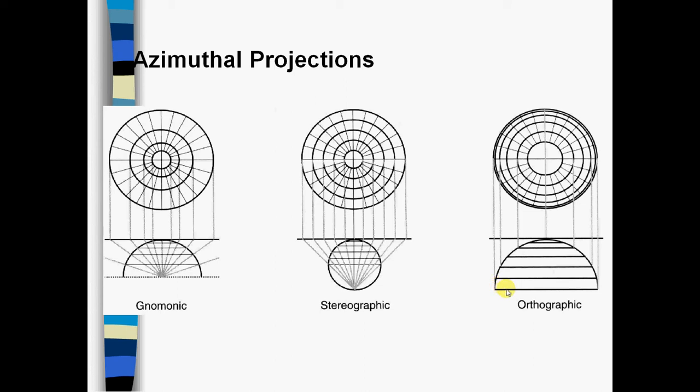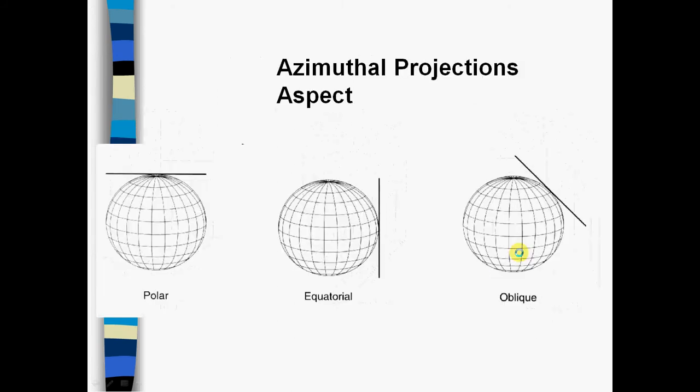With computers to help us, orthogonal projection is very commonly used. It is also possible to change the azimuth or the angle and position at which one places the projecting surface on the earth. If the sheet of paper lies on one of the poles, it's called a polar projection. If it touches at the equator, it's called an equatorial projection. If it touches elsewhere, it's called an oblique projection.